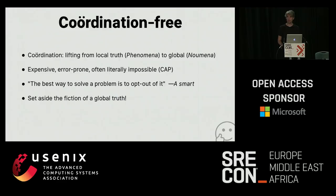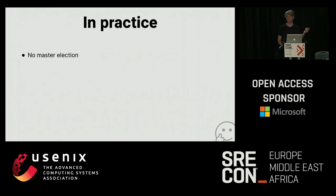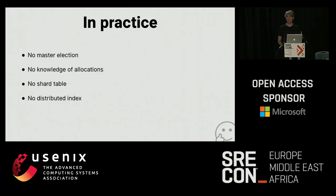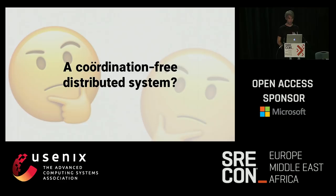Let's set aside the fiction of a global truth and engage in phenomenological reduction. In practice, what does this mean? Let's not do master election — let's not even have a concept of masters. No knowledge of allocation of where the data lives. No concept of a shard table, no distributed index, no V-nodes, no ring like the Dynamo style. We want every node to be fully opted into its own phenomenological view of the world.